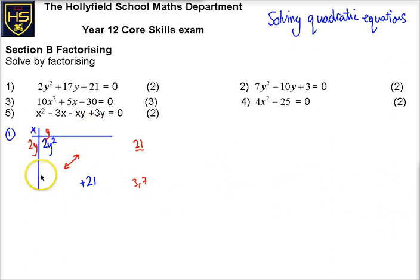So I'm left with this. And I have to choose the correct way around. Because if I put the 3 up here, that's going to give me 6y. And then the 7 down here is going to give me 7y, which is not going to be enough. So let's put the 7 up here and the 3 down here, which is going to give me 3y and 14y. And when I combine those together, I get 17y. So a good way of factorising is sometimes use the grid if you can't see it straight away. So I can factorise it as 2y plus 3 in one bracket and y plus 7 in the other bracket.